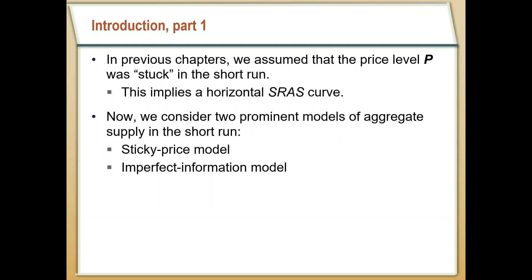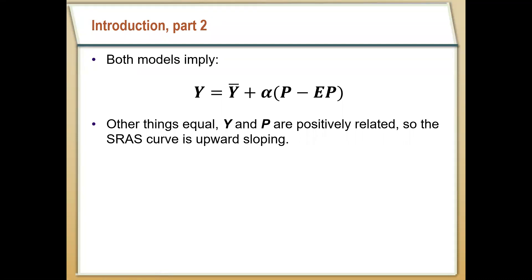The first model is the sticky price model. The second is the imperfect information model, where firms might not know as much about the economy as we'd like. Importantly, both of these models imply the same short run aggregate supply curve — that if prices are above expected price, if P is greater than P-bar, then we can have output above potential. Output is always going to be fairly close to potential, and output Y and the price level P are going to be positively related, giving us an upward sloping short run aggregate supply curve in both models.